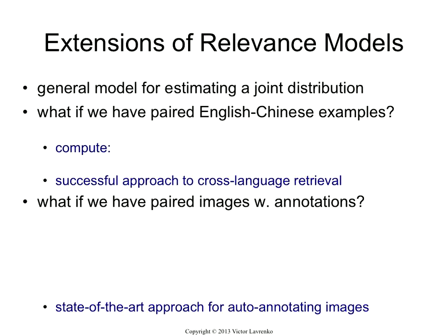We did this primarily to do something with a probability or ranking principle, to make sure that we can estimate probabilities without any examples. But in the process, you should realize this gives you a general way of estimating joint distributions. So if you have a bunch of variables and you want to estimate a joint distribution, this is one way to do that. And it turns out that you can solve lots of really interesting problems by estimating joint distributions.